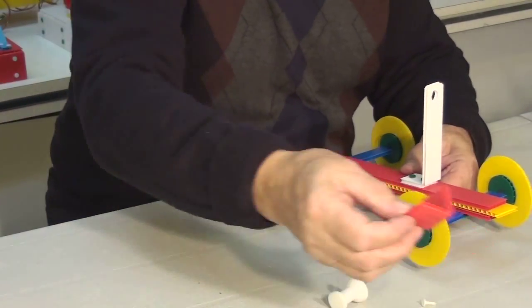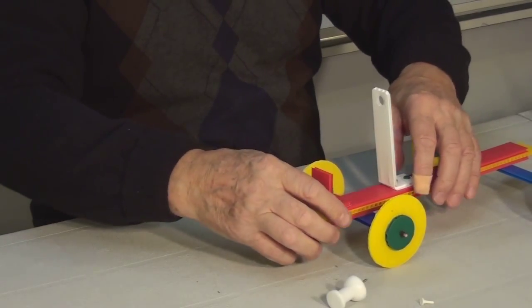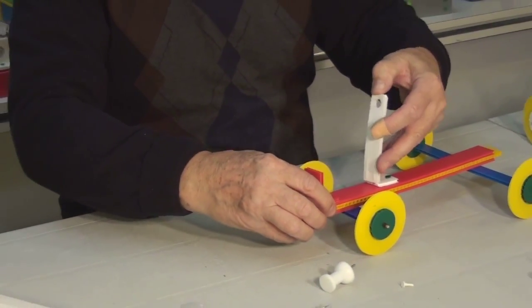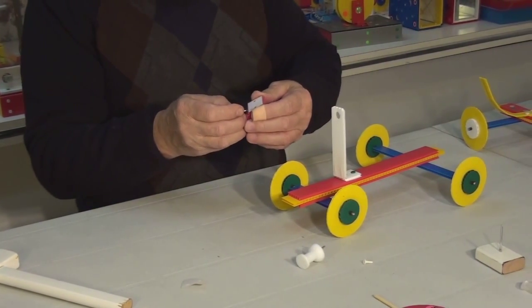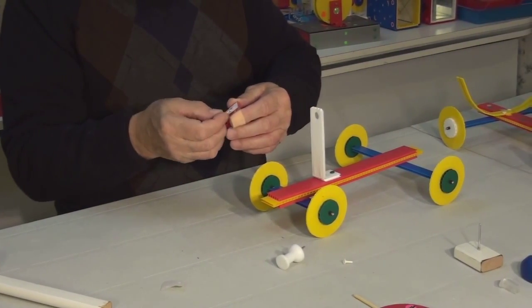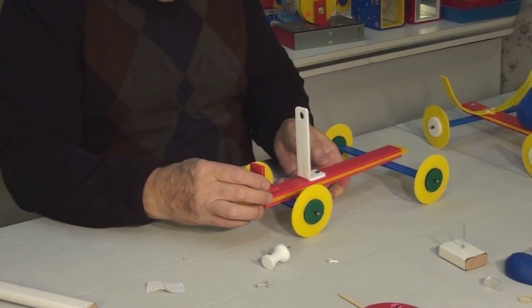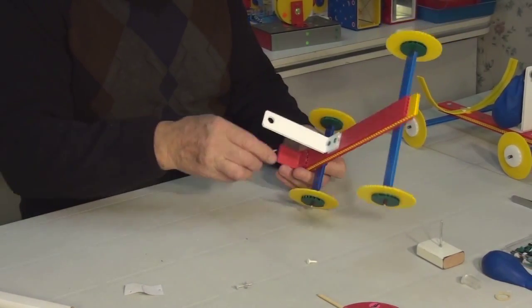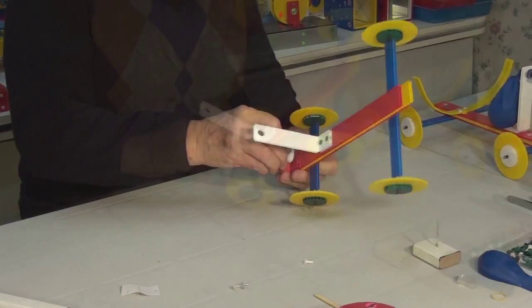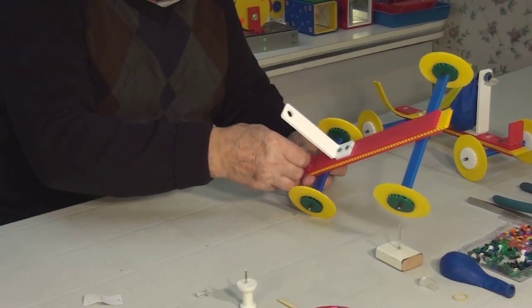Next we will attach the screen holder. It goes on the same end with the shorter axle. Again, remove the adhesive backing and stick the holder piece to the base of the car. Make two holes and insert two clips.